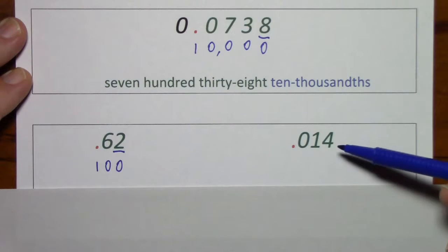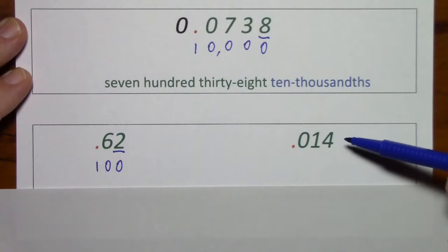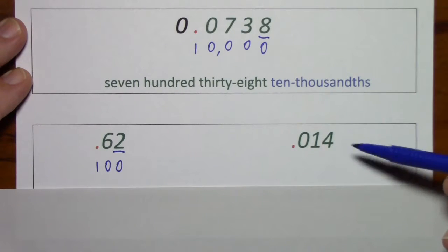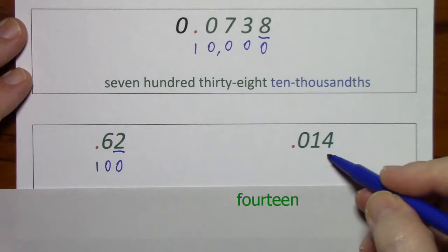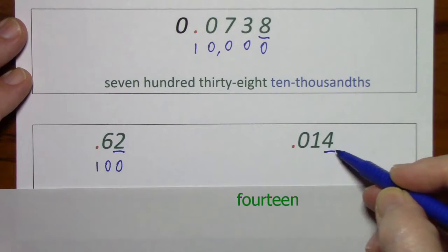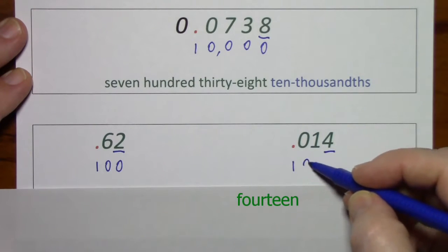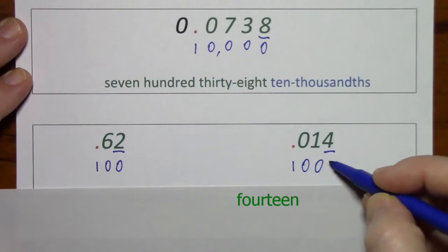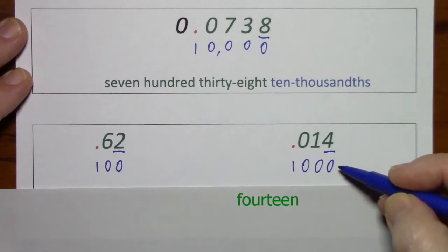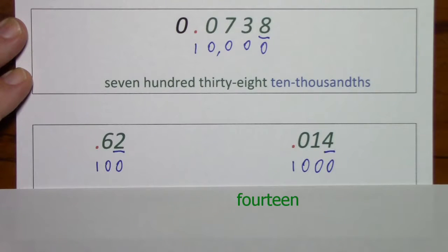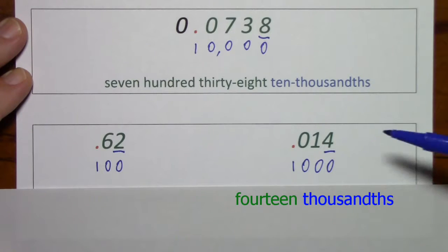To identify this number, you would first say fourteen. And then you identify the place value of that last digit, which is thousandths. So this is fourteen thousandths.